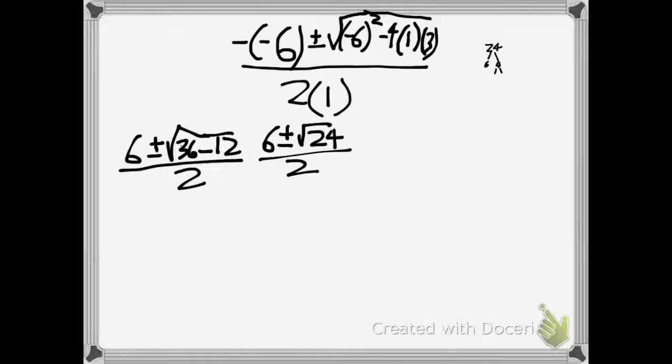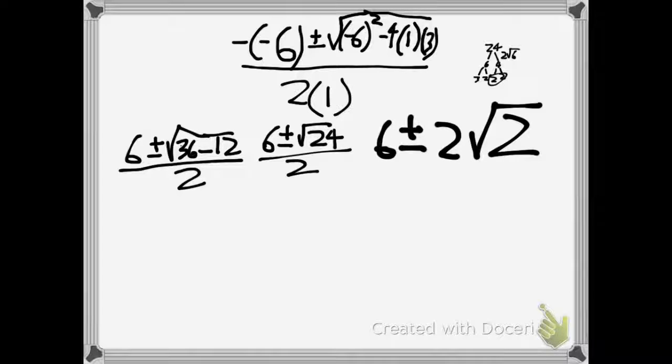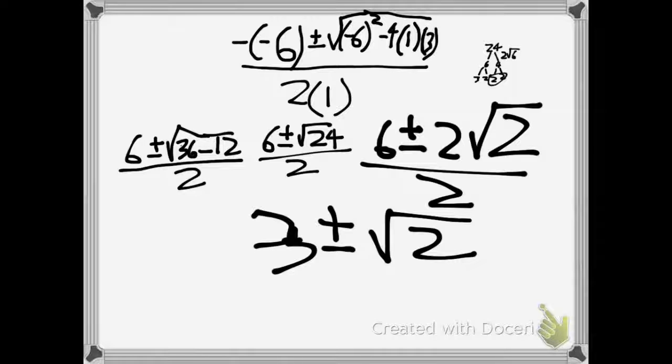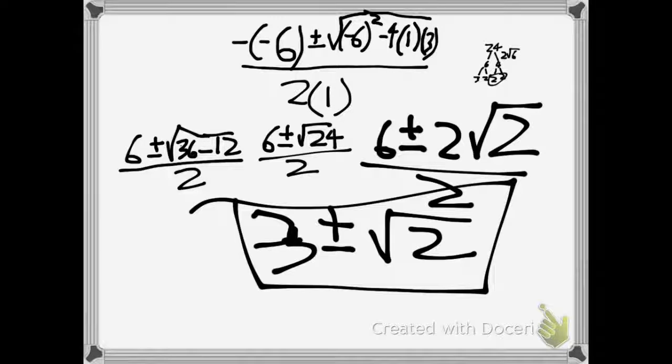We split 24 into 6 and 4. Let's split 4 into 2 and 2, and split 6 into 3 and 2. And we get 6 plus or minus 2 times the square root of 6. That's 3 plus or minus the square root of 2 because we divide by 2.